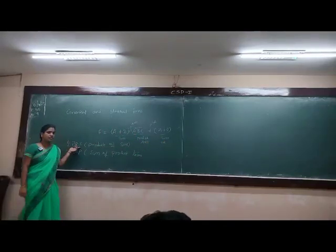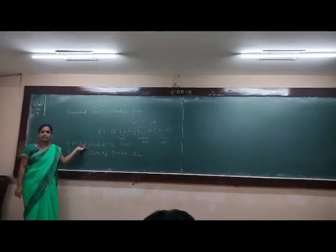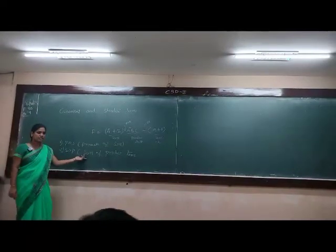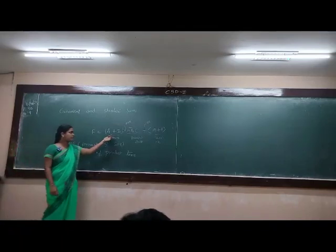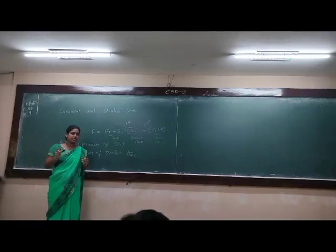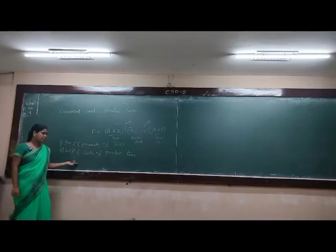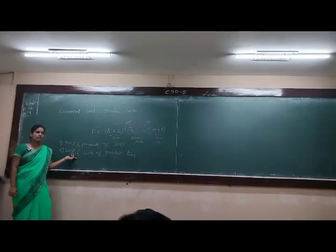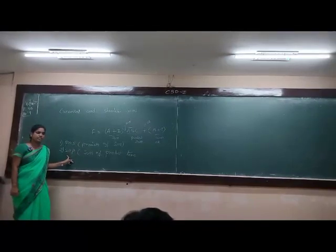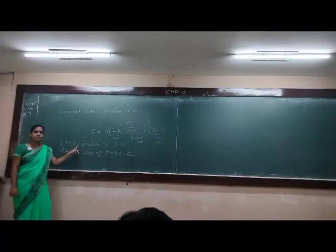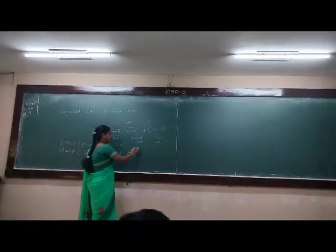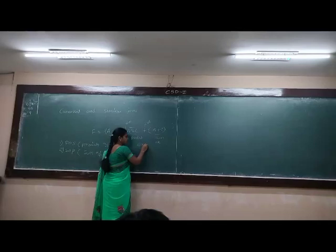So what are the sum of products? The sum of products are only the product terms themselves - ABC, AB, AC. Now we are done with the sum of products system. Only product terms themselves.